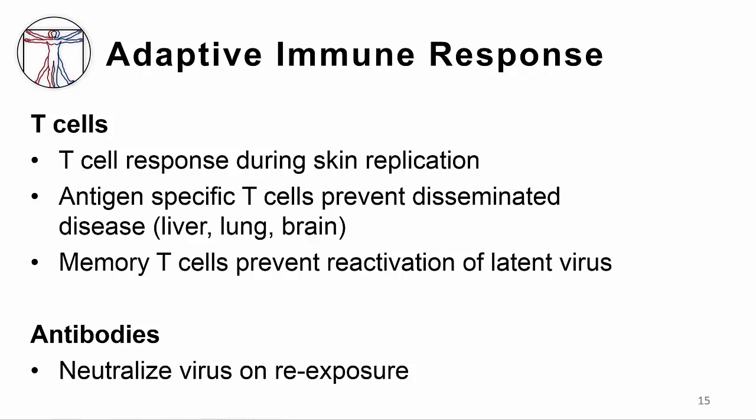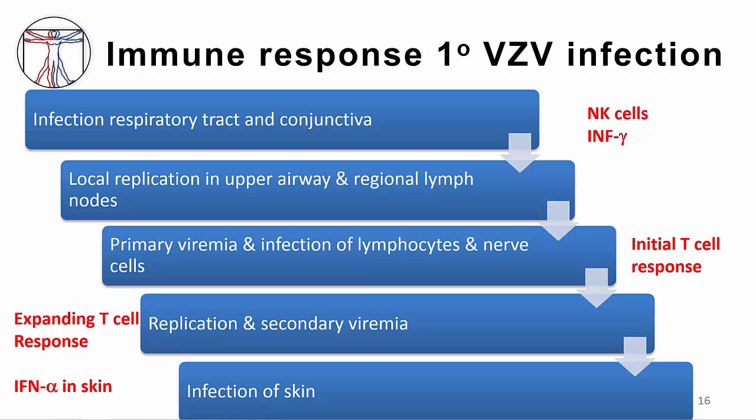While the innate immune response helps limit viral replication, ultimately it's the adaptive immune response that is responsible for controlling infection. The antigen-specific T cell response occurs when the virus is replicating in the skin, and this vigorous response limits viral replication in other organs like liver, lungs, and brain. The presence of memory T cells also prevents reactivation of virus that becomes latent in the sensory nerve ganglia. The humoral immune system plays an important role if the patient is re-exposed to VZV, as circulating antibodies can bind virus and clear it before causing disease.